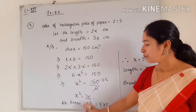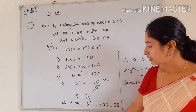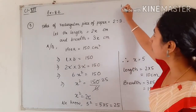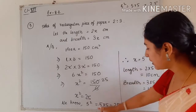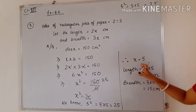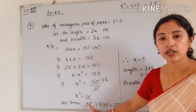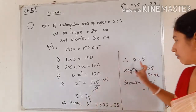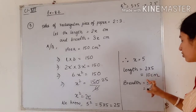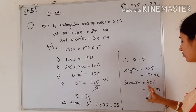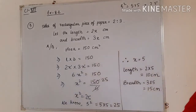We apply the laws of exponents: x into x gives x squared. Transferring 6 to the other side, we get x squared equals 25. Since 5 squared is 25, the value of x is 5. Therefore, the length is 2 into 5, that is 10 centimeters, and the breadth is 3 into 5, that is 15 centimeters.